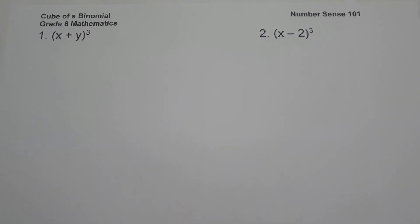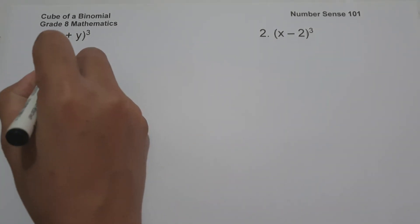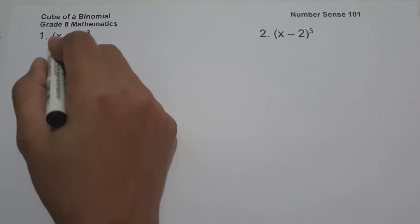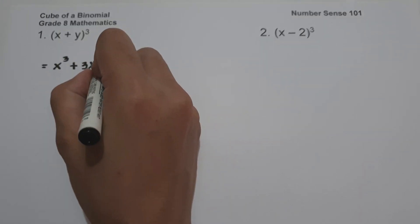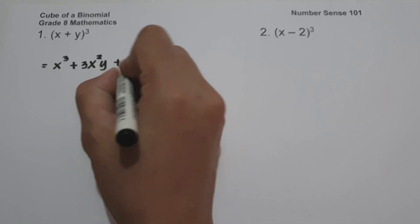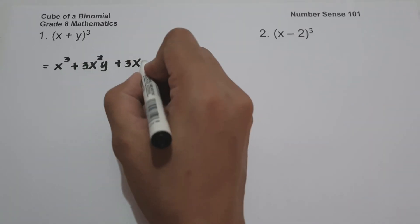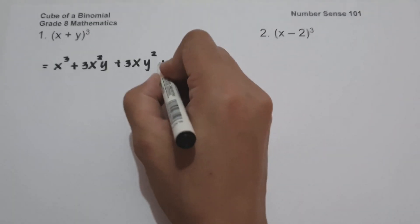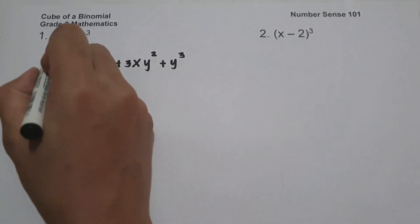On Example 1, we have the quantity (x + y) raised to 3. To simplify, the cube of the first term is x raised to 3, plus 3 times the square of the first term multiplied by the second term y — that is 3x²y — plus 3 times the first term multiplied by the square of the second term — that is 3xy² — and the last term is y raised to 3. This is our answer.